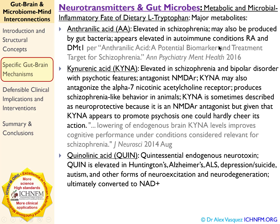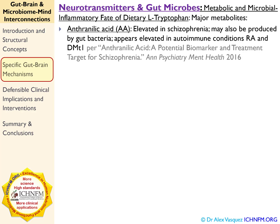When we talk about the kynurenine pathway, the major products of the kynurenine pathway are — these aren't prioritized, they're just listed as they are produced. Anthranilic acid is one of the kynurenine metabolites. Let's focus on anthranilic acid: anthranilic acid is elevated in schizophrenia, as well as a few other conditions that we'll look at in just a minute.